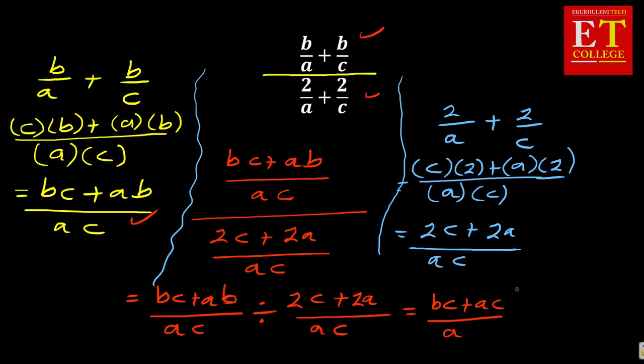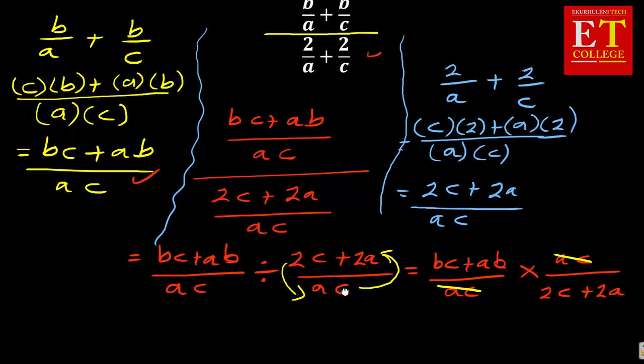If you continue, it will be b c plus a b over a c. This is supposed to be a b, b c plus a b over a c. Now, the moment you put it times, the bottom goes to the top and the top comes down. So you're going to have your a c all over two c plus two a. And in this case, you're going to cancel the a c as well as the a c. But the question is, is it done? I don't think it's done.